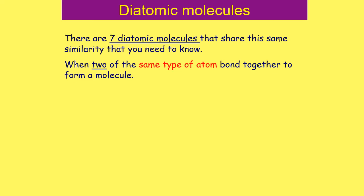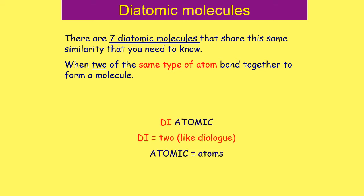There are seven elements on the periodic table that form diatomic molecules similar to hydrogen, and you need to be able to remember all seven of them. A diatomic molecule is when two of the same type of atom bond together to form a molecule — 'di' for two, 'atomic' for atoms.